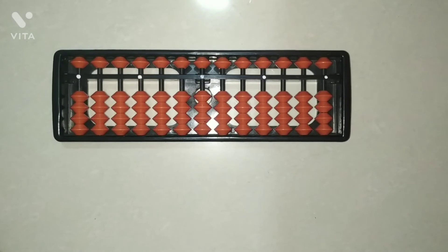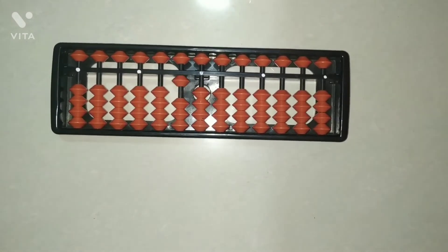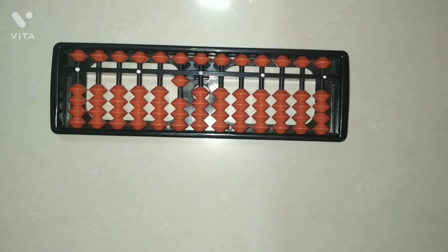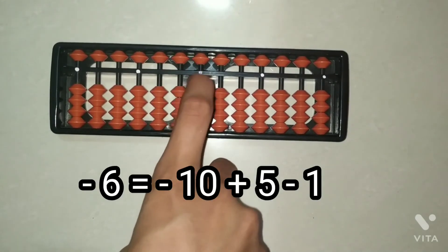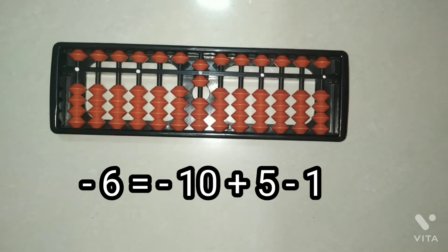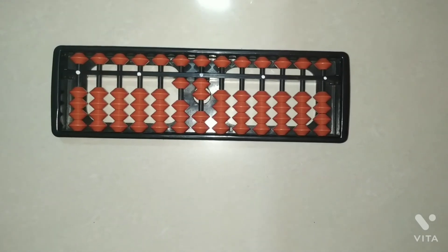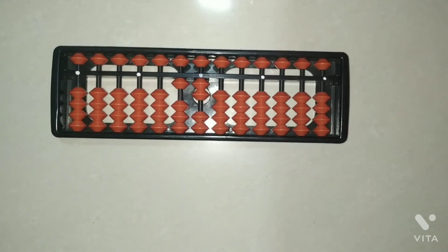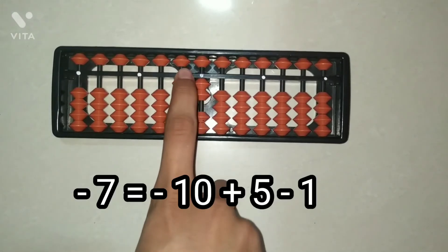Now we will learn subtraction of mixed complement. So here is a 10. First minus 10, add 5, and minus 1. Now second question, here is 21 and we have to minus 7 in this 21. First minus 10, add 5, and minus 2.